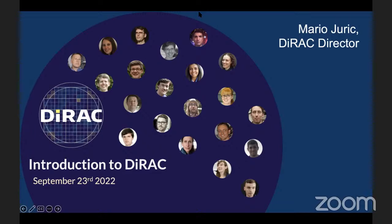Hello everyone, and welcome to this very special talk in our webinar series on this autumn equinox. This webinar is being streamed live on YouTube — you can find the link on our website or access it on our YouTube channel, Linea and CPI. Today we have the pleasure of having Dr. Mario Juric, Associate Professor of Astronomy and Director of the DIRAC Institute at the University of Washington.